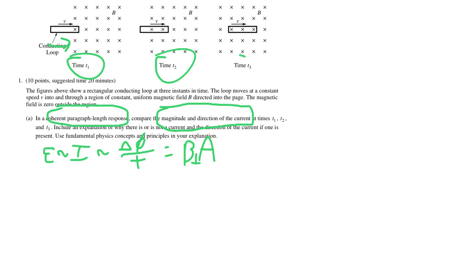In time 3 though, notice that the flux is actually constant. Once it's fully enclosed, the BA is staying the same during time 3. Actually once from this point all the way to when it starts to exit, it's actually going to stay constant. So we're gonna go ahead and write a paragraph about this.